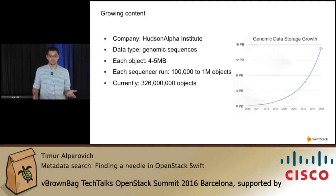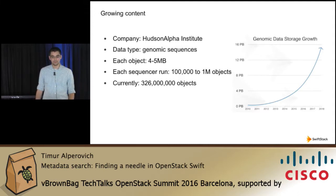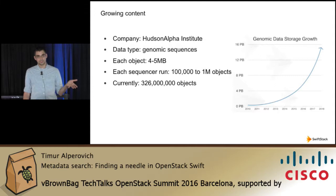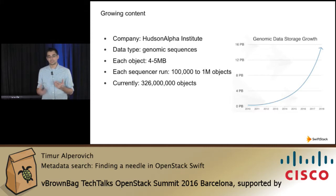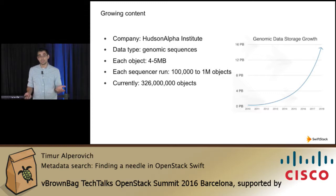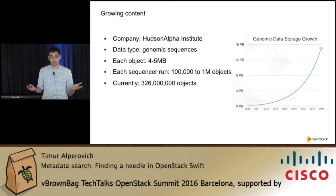To set the stage, over the past few years we've seen a growing explosion of content in OpenStack Swift. One of our customers, HudsonAlpha, does genomic sequencing. For every run of their sequencer, they're generating between 100,000 and a million objects. There are currently up to 326 million objects in their cluster, and this is their projected growth curve which they're still on.